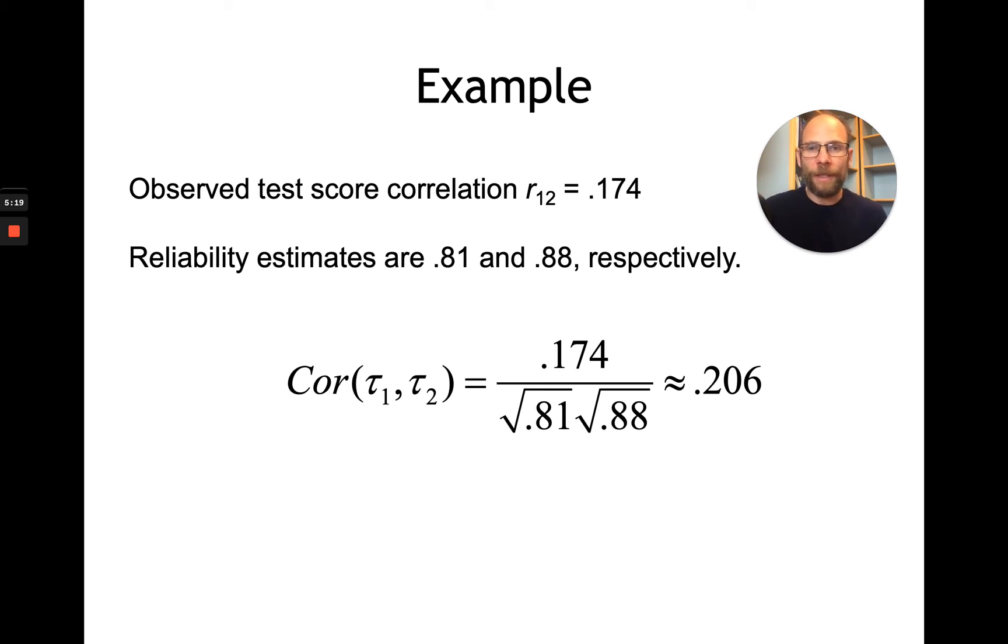Now, this is a pretty tedious procedure, right? Because you have to first calculate the observed correlation, you have to come up with a reliability estimate, the reliability estimate has to be accurate, you're making assumptions when you estimate those reliabilities. So there's a lot of work involved in this. Fortunately, nowadays, we have a more straightforward method for implementing this correction for attenuation. We don't have to calculate it by hand using all these steps.